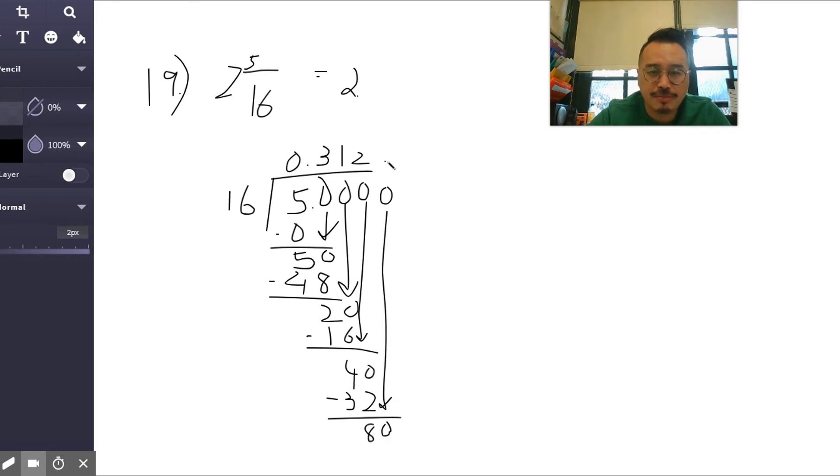16 times 5 is 80, there you go, nice. Alright, so I think that's good. Now let's see, what is it? 2.3125.